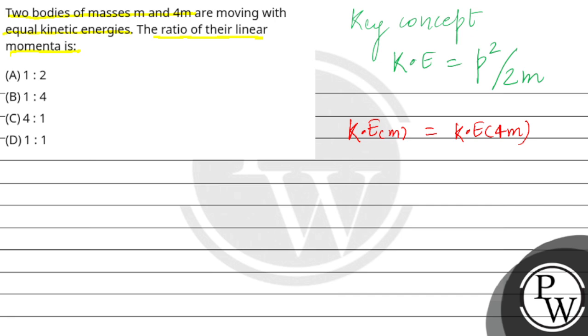We can write the kinetic energy for mass m as p squared (which is linear momentum for mass m) divided by 2m.